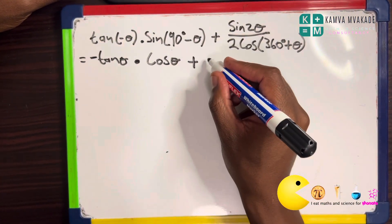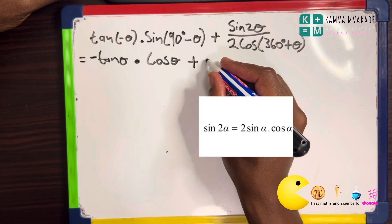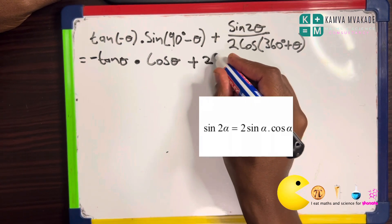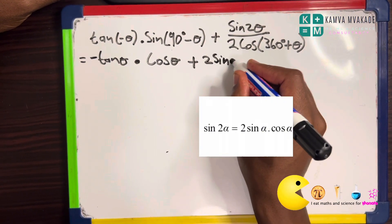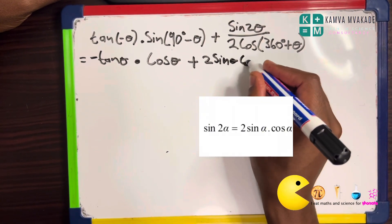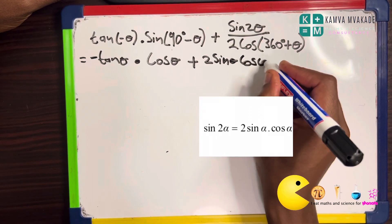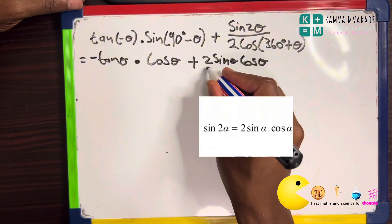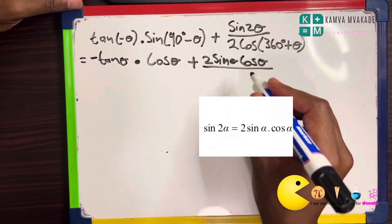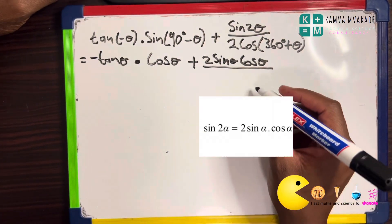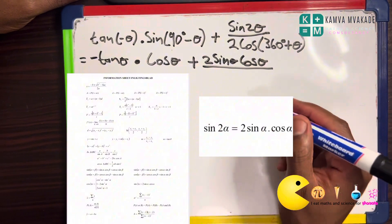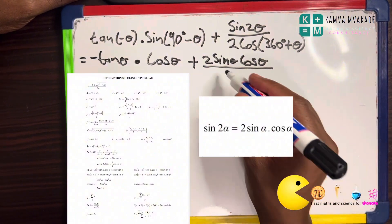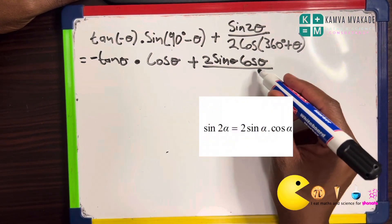The double angle of sine 2theta expands to 2 sine theta cos theta. You can find this on your information sheet — sin 2theta equals 2 sine theta cos theta.